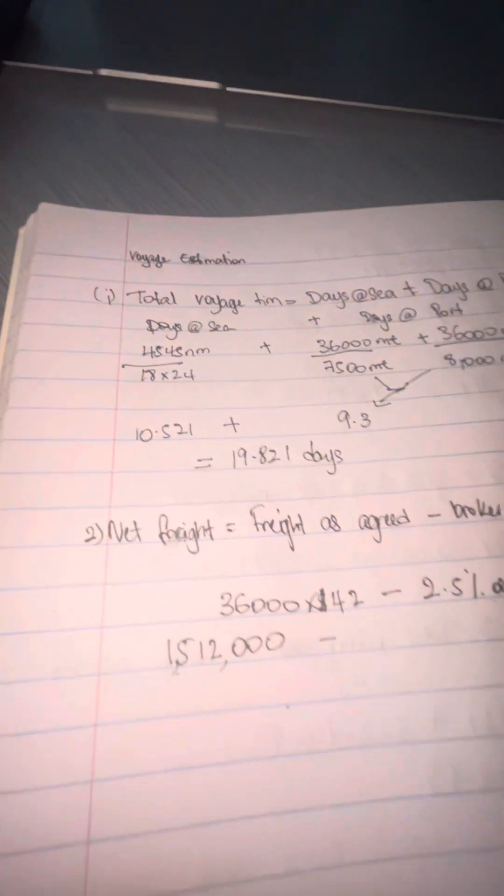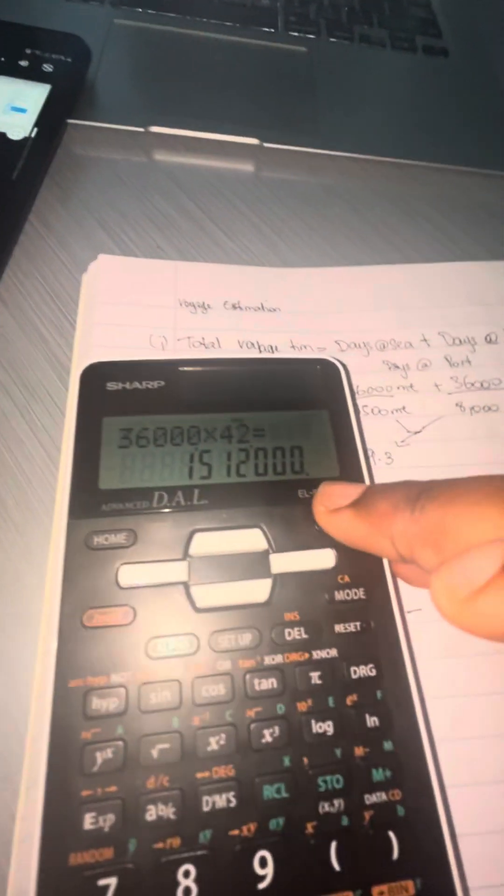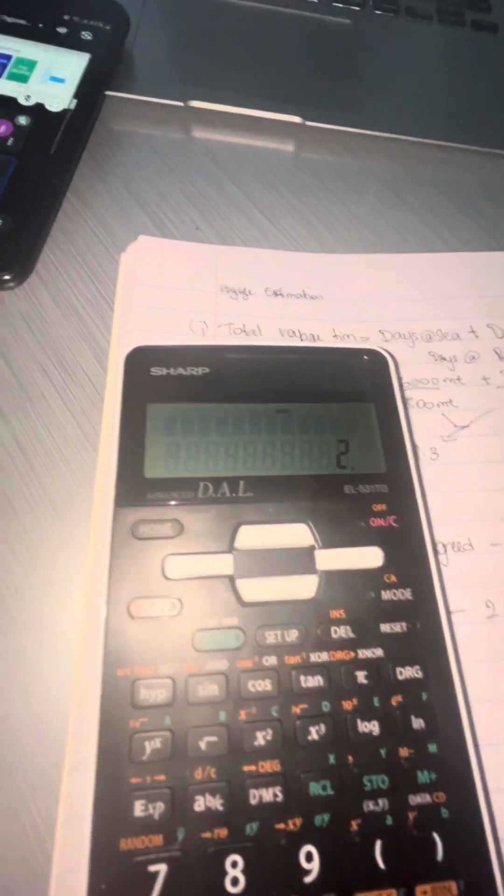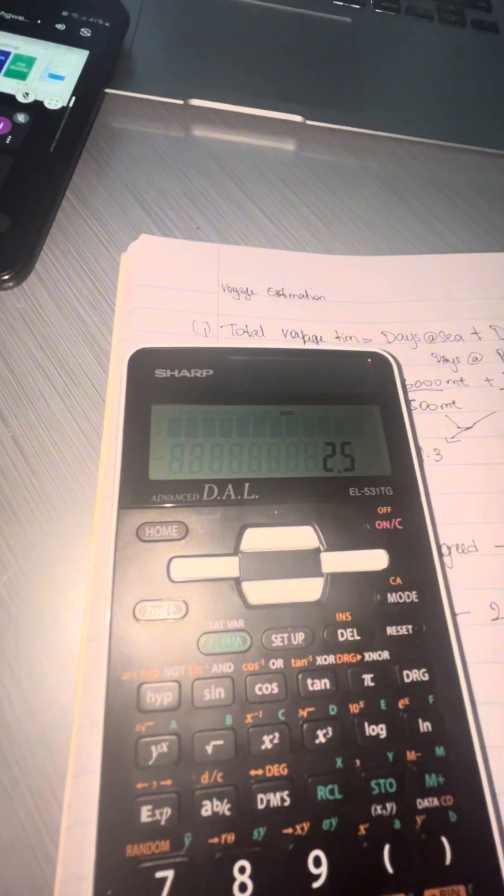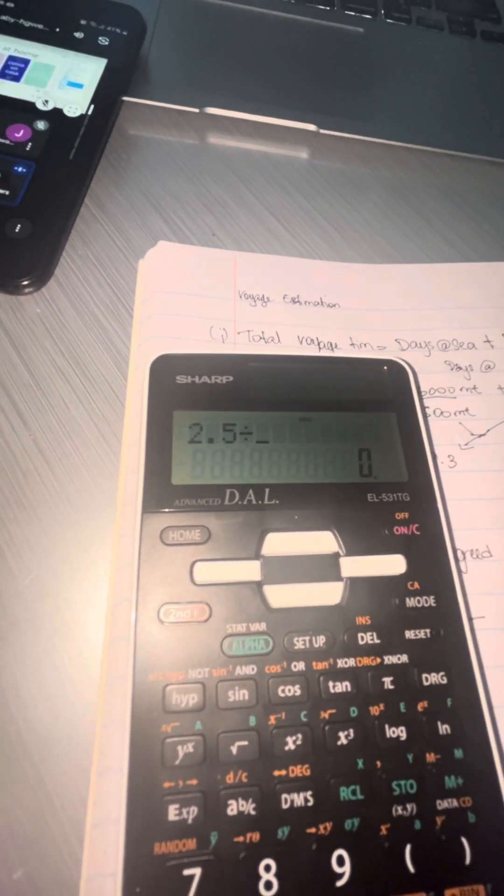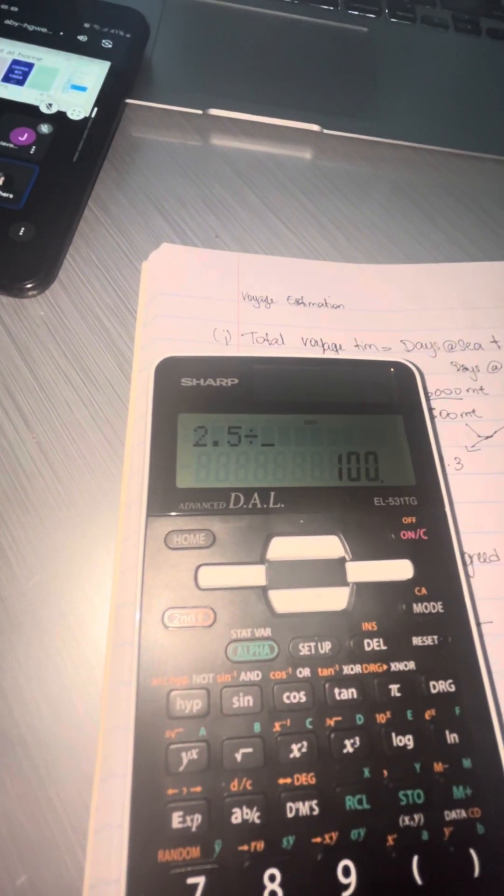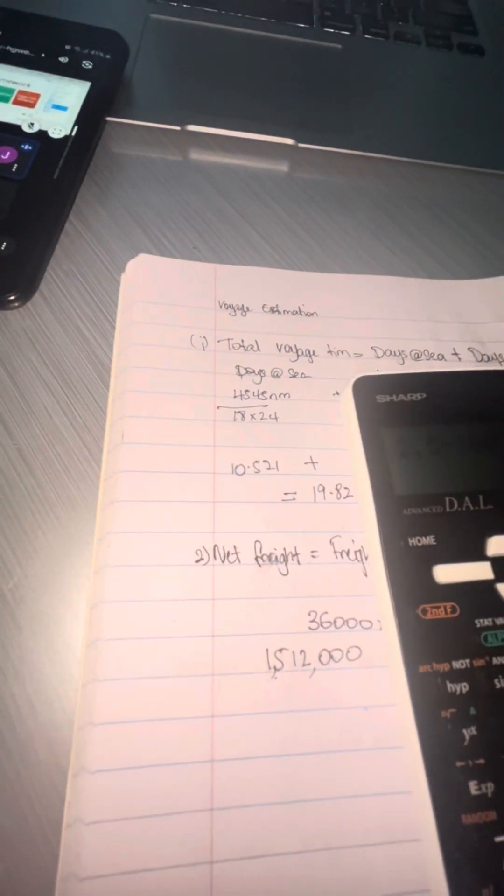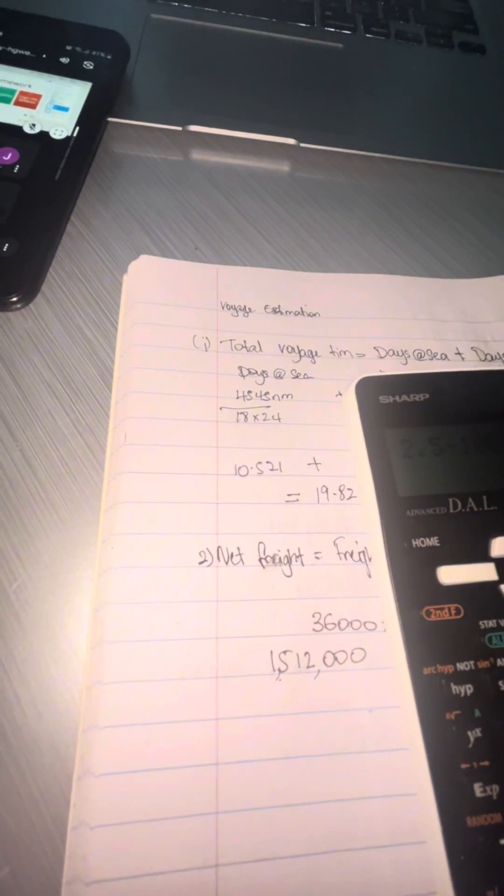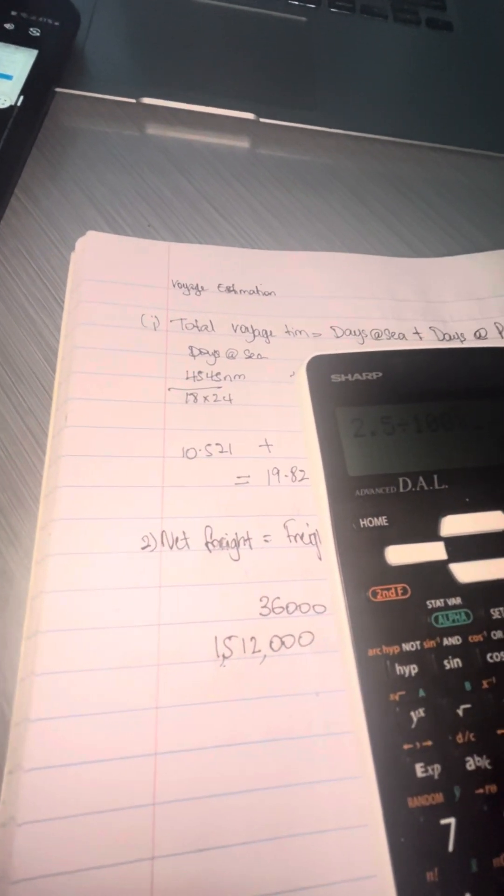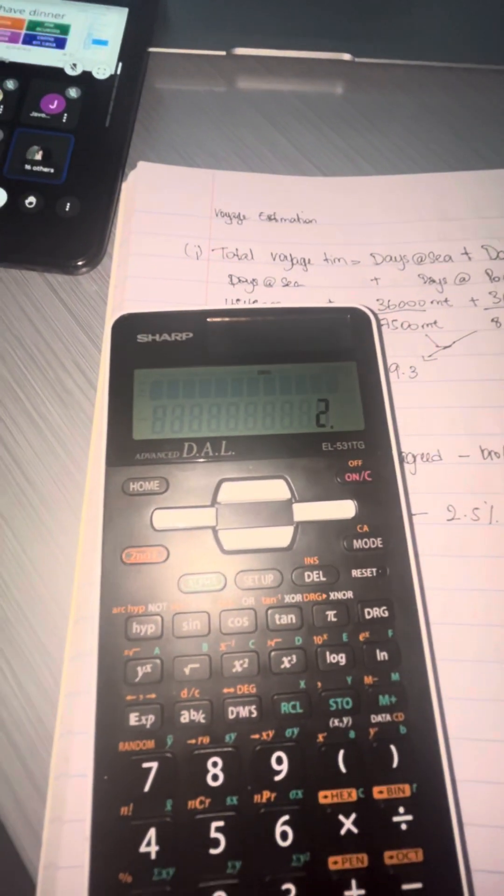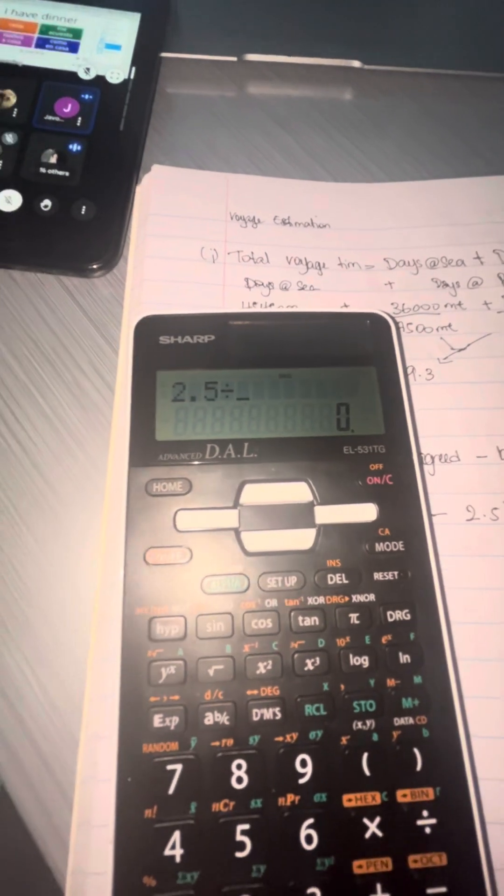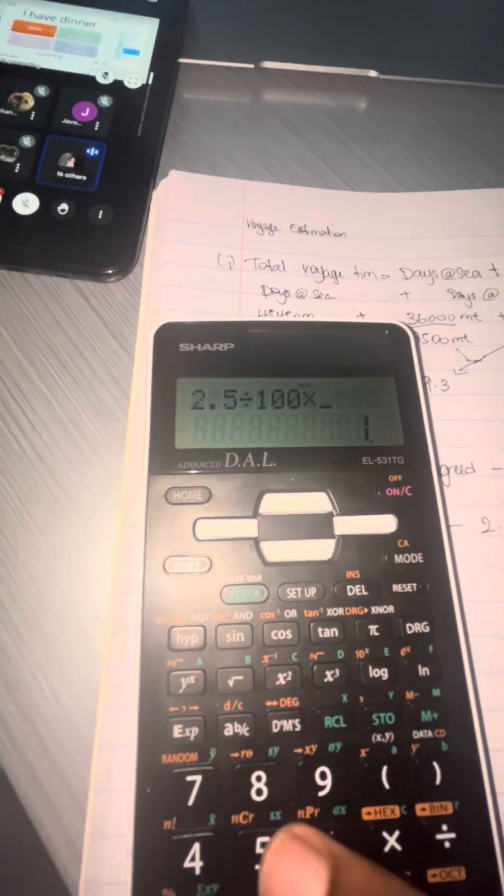This is the answer we got for the first part—the freight as agreed is 1,512,000. Then we're going to find 2.5% of that 1,512,000. In the calculator, do 2.5 divided by 100 times 1,512,000, and take away that from the original figure.